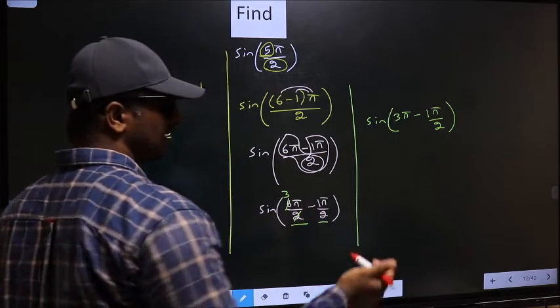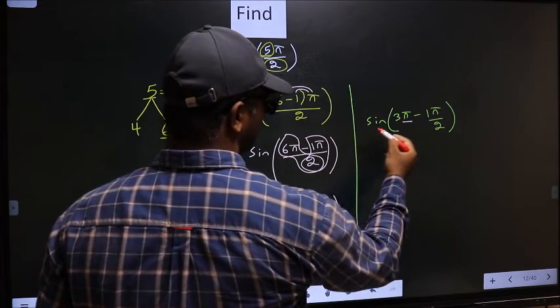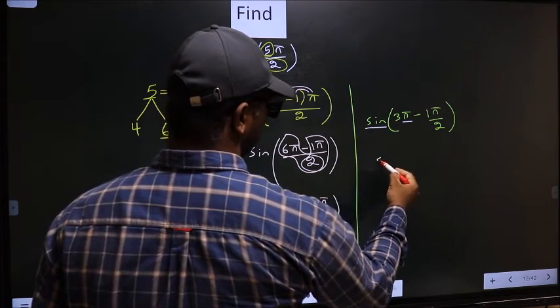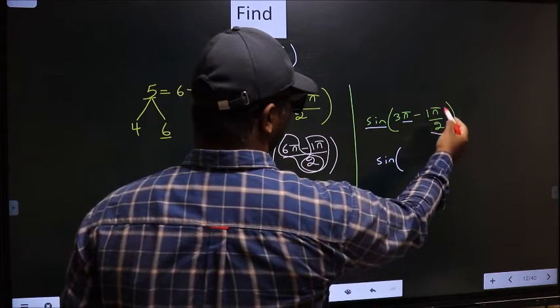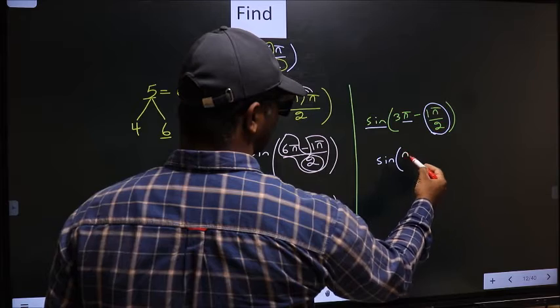Next, here we have π. So sin is not going to change. It will remain sin. And inside we get this angle π/2.